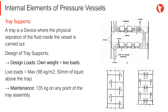And second, maintenance loads. Tray support members, all beams, support clips, etc., shall be designed for a concentrated load of 135 kg at any point of the installed assembly. The design shall be based on the corroded thickness.